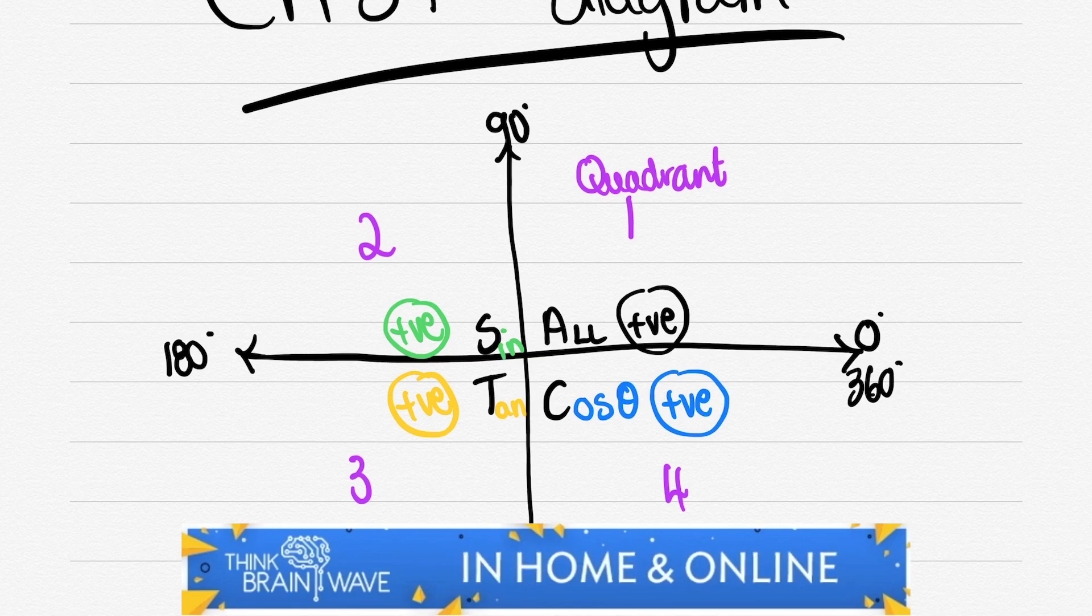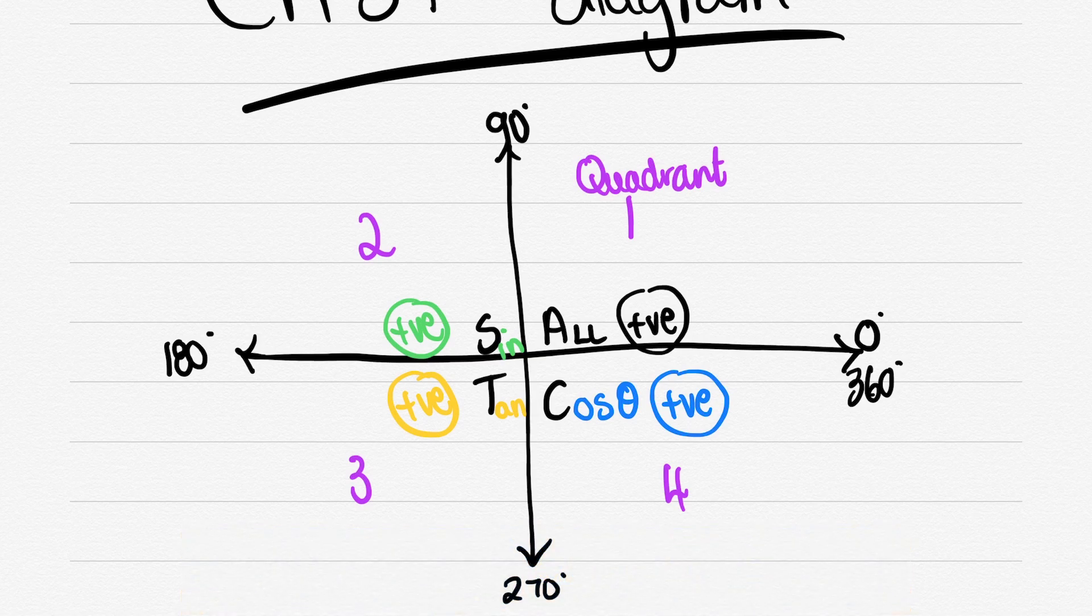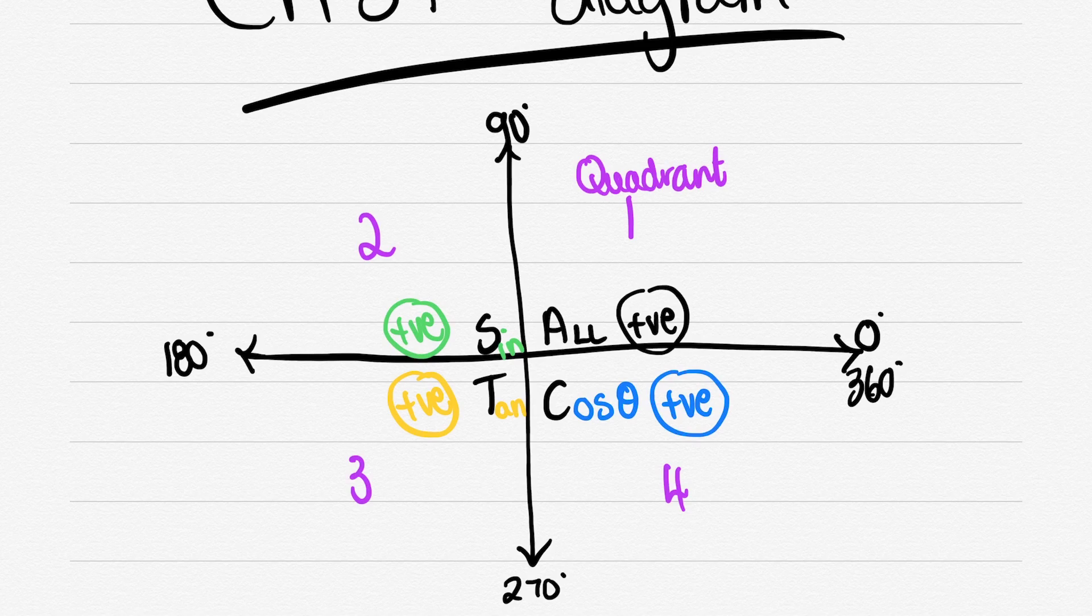Right from 180 it goes another 90 degrees to 270 degrees at the bottom, and from 270 degrees it continues upwards to 360.